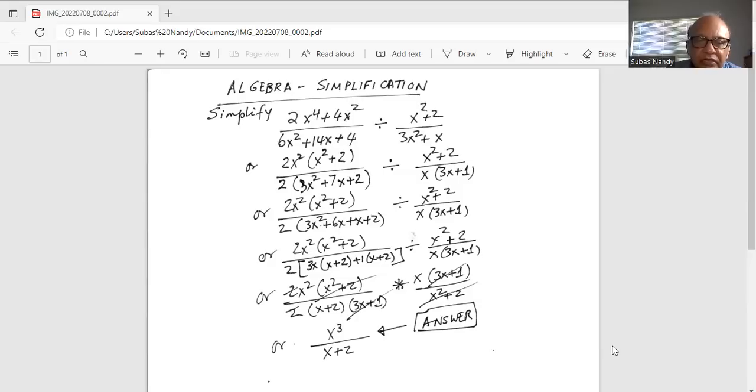So we have in the first expression, 2x square times x square plus 2 divided by 2 times x plus 2 times 3x plus 1 multiplied by.